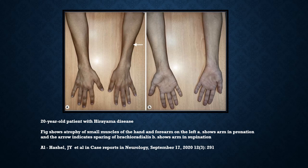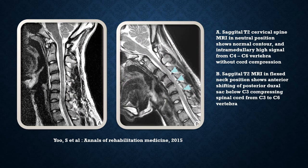This image shows a 20-year-old patient with Hirayama disease, demonstrating atrophy of the small muscles of the hand and forearm on the left side. Image A shows the arm in pronation with an arrow indicating sparing of the brachioradialis muscle, and image B shows the arm in supination. This is from Al-Hashal et al., in Case Reports in Neurology, September 2020.